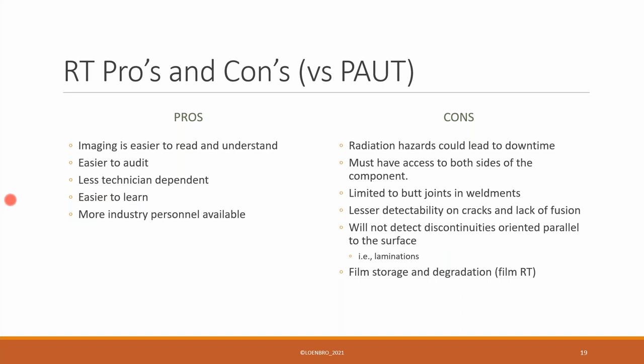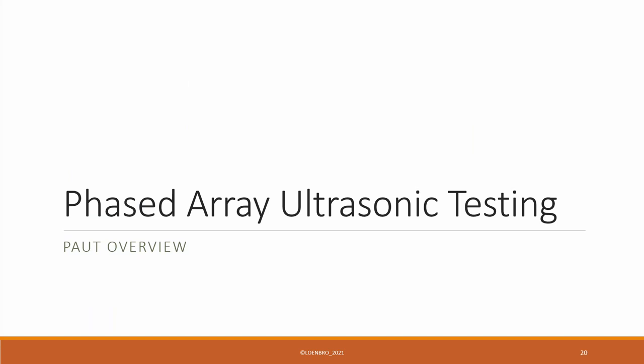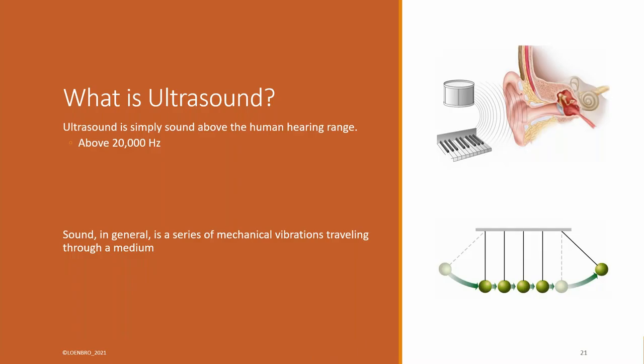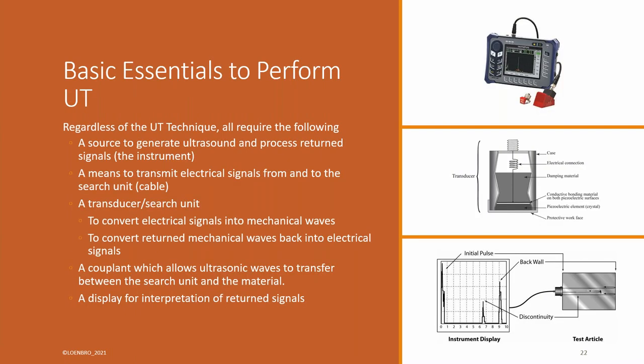All right. So hopefully that gives you some good information if you're not familiar with radiography. So let's run through phased-array ultrasonics. So question number one is what is ultrasound? It's simply sound above the human hearing range. So sound, as I've said here in general, is a series of mechanical vibrations. And just like we can relate radiography to light and how we see light, we can also relate what we hear and how sound works in the audible world to how sound works in the ultrasonic world as well. So again, just a series of mechanical vibrations that travel through the material.